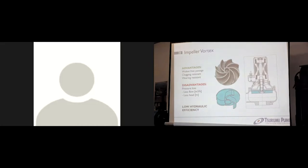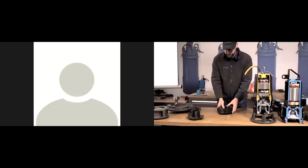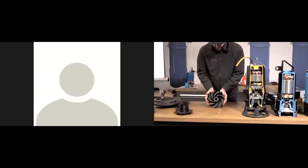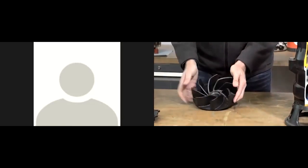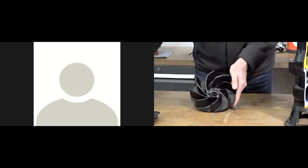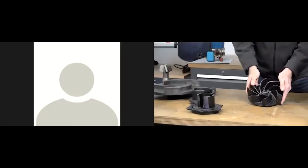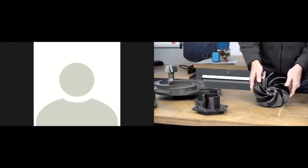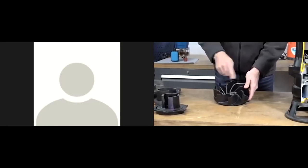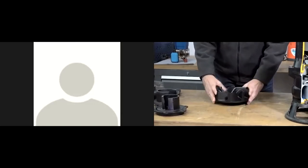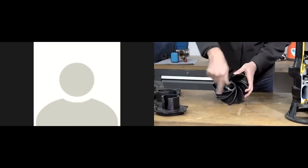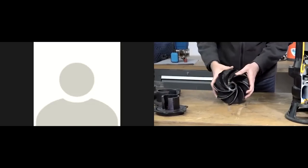Looking at a typical example of this impeller: its shape is round, like all other impellers. We have the impeller vanes — in this case it's a multi-vane impeller, though vortex impellers can also have only three vanes. The general design has a ground plate, the vanes all similarly oriented, and this design creates a vortex streaming that is responsible for the pumping effect.